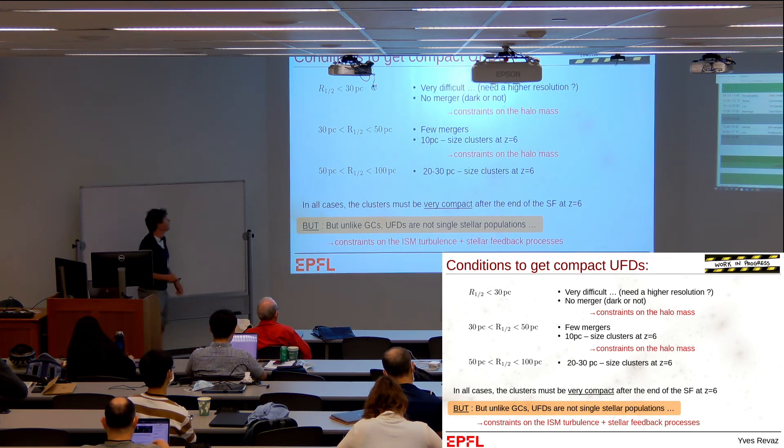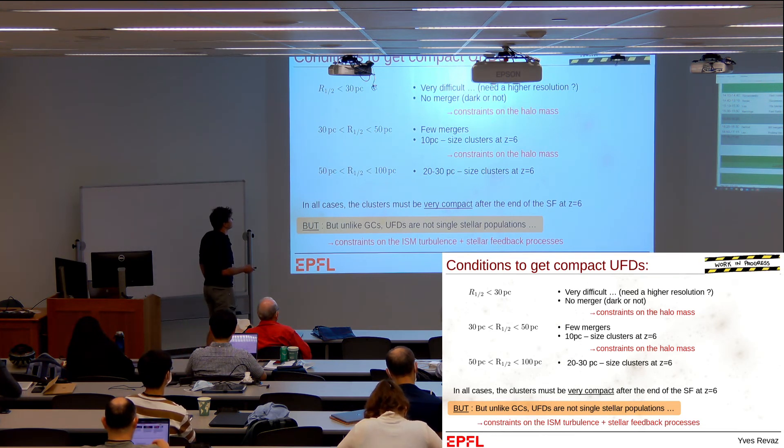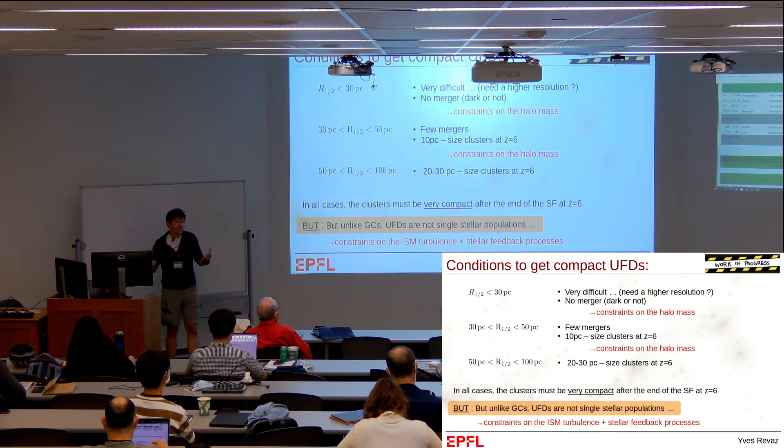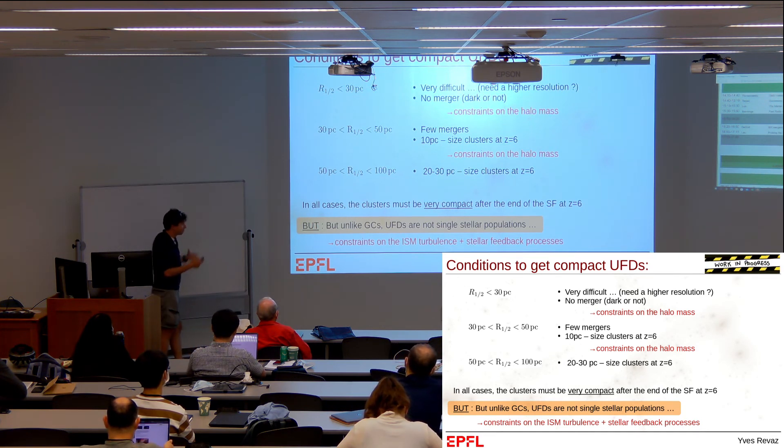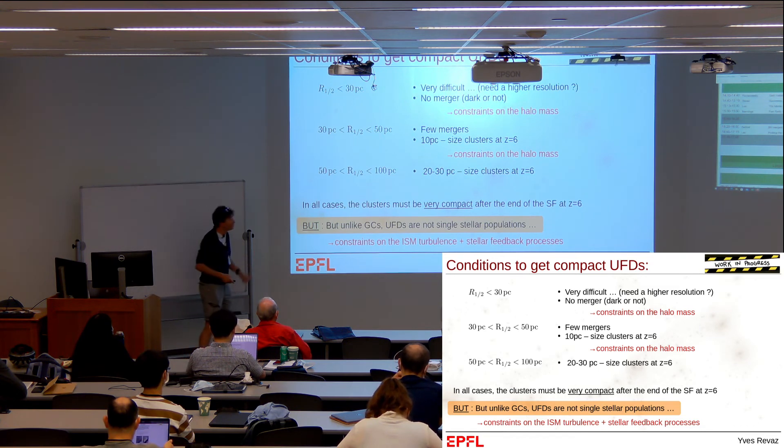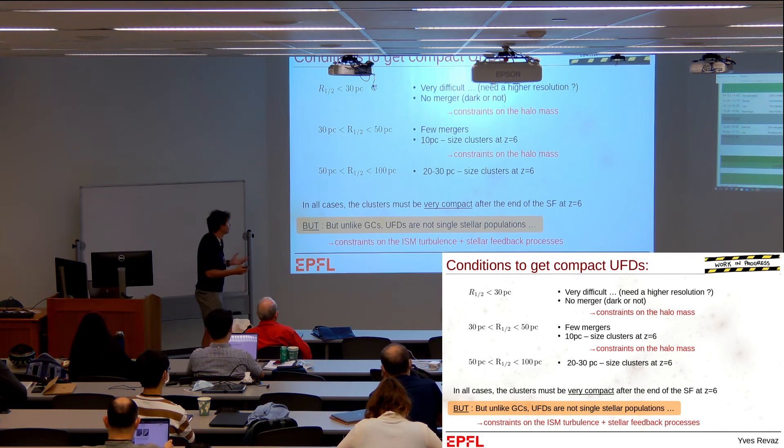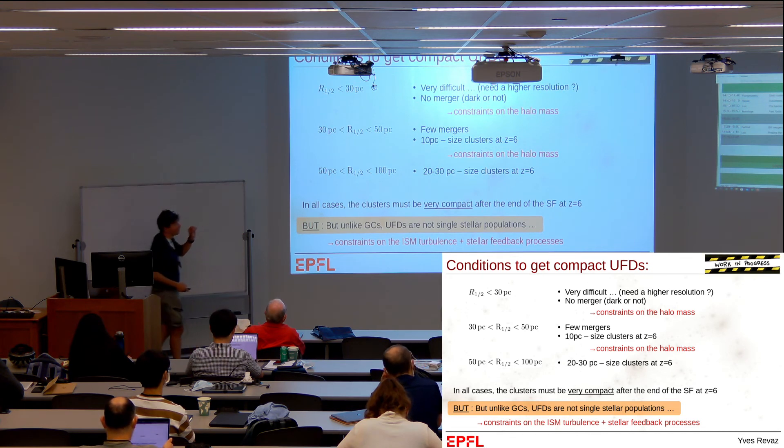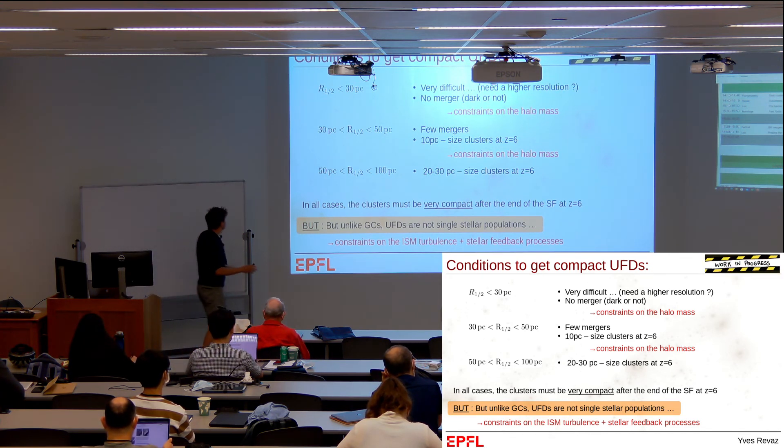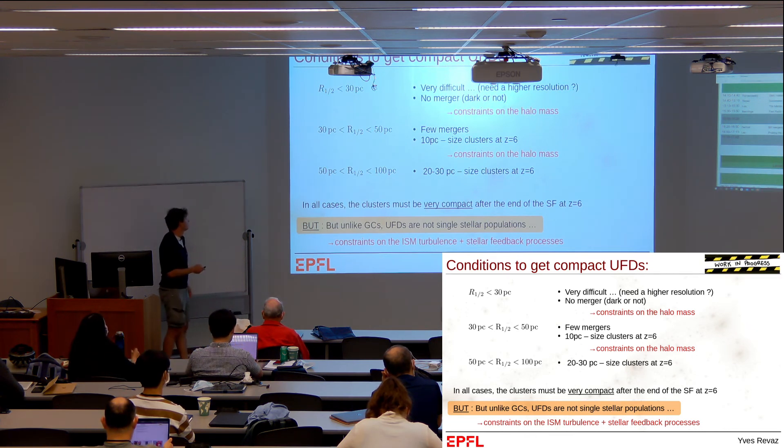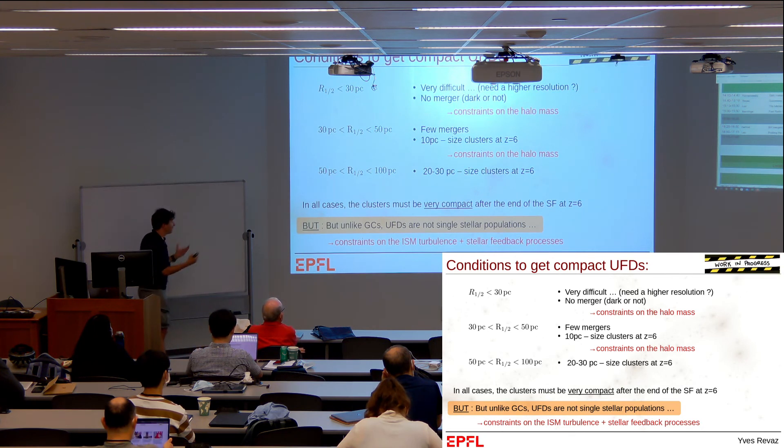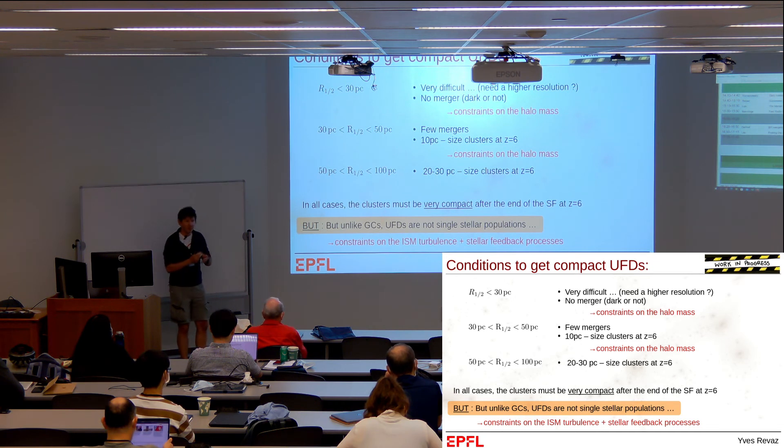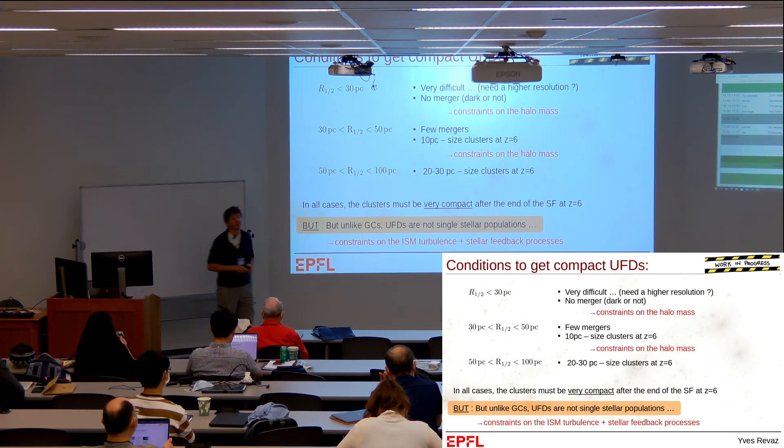We've not been able to obtain a system with half-light radius much smaller than 30 parsecs. That's interesting because it gives us constraints on the halo mass. If you have a big halo, you expect lots of mergers, so you'll never form something compact. It's possible to obtain ultrafaints with size between 30 and 50, but this requires very special conditions—few mergers, so again a constraint on halo mass as well as on the size of the cluster at redshift six. If it's larger than 10 parsecs, you're basically dead. It's easier to reproduce ultrafaints with mass between 50 and 100, but the clusters must be quite small at redshift six. If you want to reproduce compact dwarf galaxies, you need to start with very compact clusters, which provides strong constraints on the feedback.